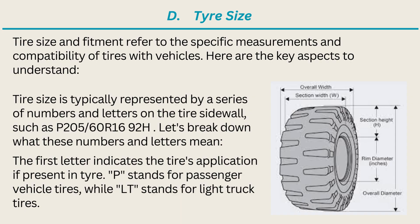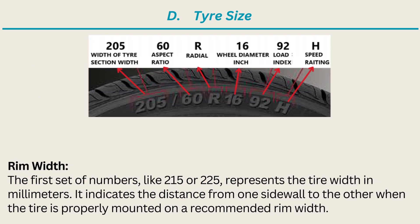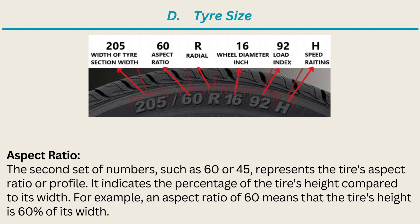Tire Size and Fitment: tire size and fitment refer to the specific measurements and compatibility of tires with vehicles. Tire size is typically represented by a series of numbers and letters on the tire sidewall, such as P215/60R16 or 225/45ZR18. The first letter, such as P, indicates the tire's application — P stands for passenger vehicle tires, while LT stands for light truck tires. The first set of numbers, like 215 or 225, represents the tire width in millimeters — the distance from one sidewall to the other when properly mounted. The second set of numbers, such as 60 or 45, represents the tire's aspect ratio or profile, indicating the percentage of the tire's height compared to its width. For example, an aspect ratio of 60 means the tire's height is 60% of its width.